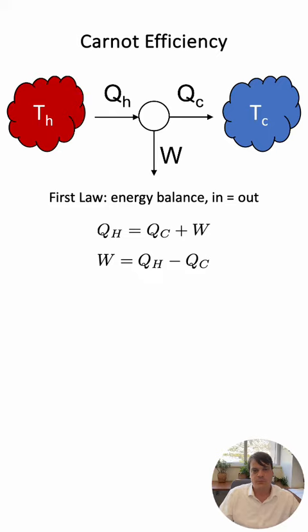If we solve for work we get the difference between the heat in the hot side and the heat in the cold side. We define the efficiency as the work produced divided by the heat input.